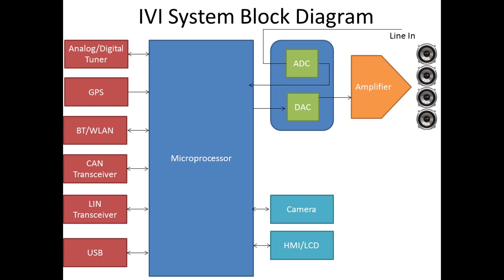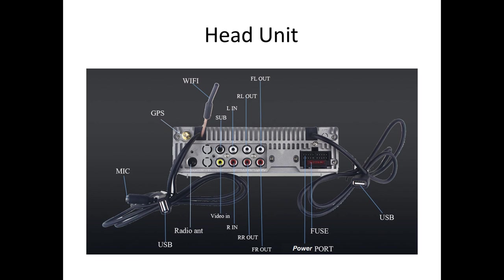The amplified signals are then directed to the speakers in the car — typically four speakers, two in the front and two in the back. This concludes the basic system block diagram of an in-vehicle infotainment system. The next slide shows an example of a typical head unit, displaying its back side with different connectors for various functionalities: ports for Wi-Fi, GPS, microphone, radio antennas, video input/output, speaker output, and a power connector that supplies power to the infotainment head unit.